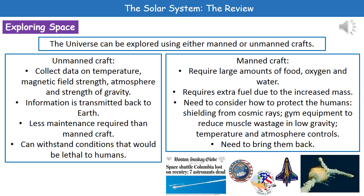That information is then transmitted back to Earth, where we can look at it and work out what it means about the different planets, moons, and stars. In terms of maintenance, unmanned craft require a lot less than manned craft, because we don't have to worry about conditions that would kill a human — things like temperature control or oxygen. So we need fewer systems, and the craft will withstand conditions that would be lethal to us.